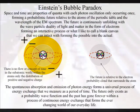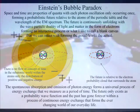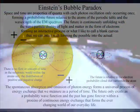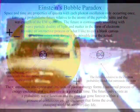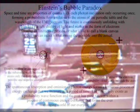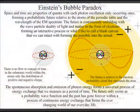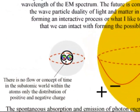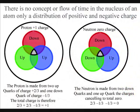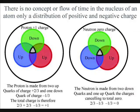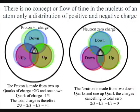It may seem far-fetched to say that the spontaneous absorption and emission of photon energy forms a universal process of energy exchange that we measure as a period of time. But it is logical when you think there is no flow or concept of time in the subatomic world within the atoms—only the distribution of positive and negative charge.